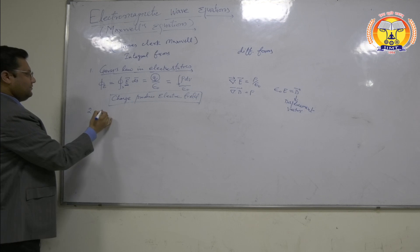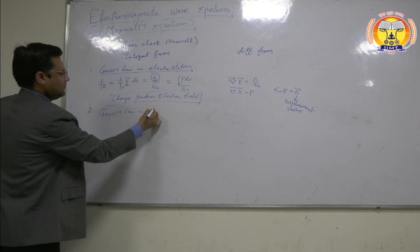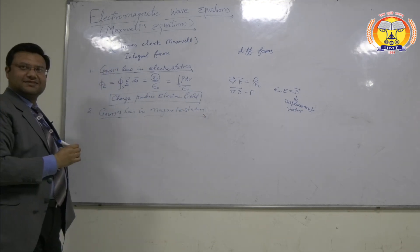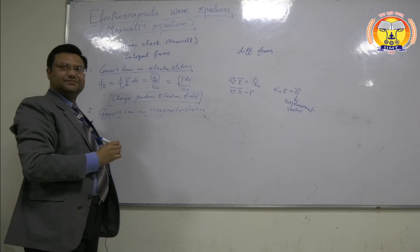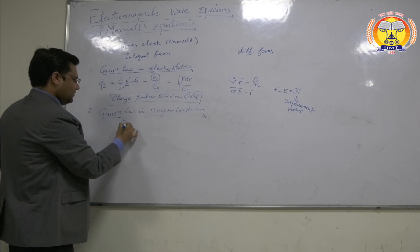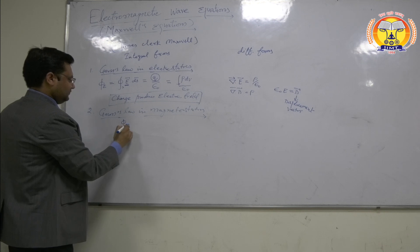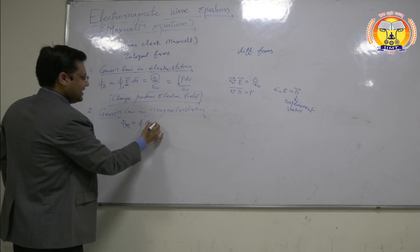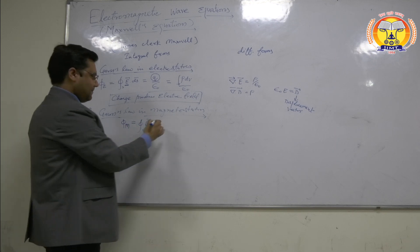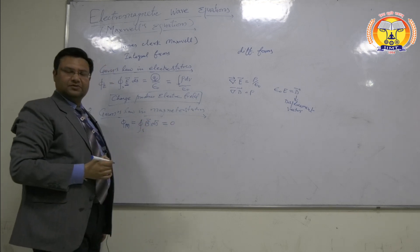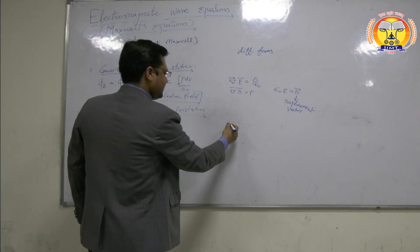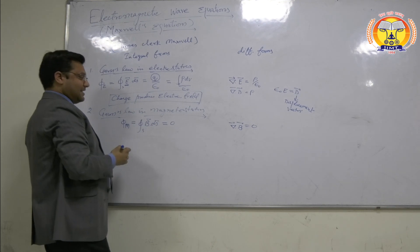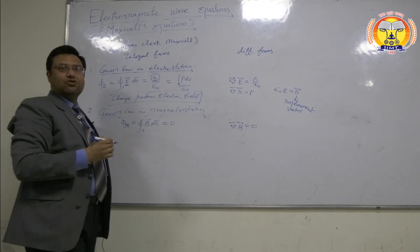The second equation is Gauss's law in magnetostatics. It states that the surface magnetic flux — that is, the integral of B dot dS over a closed surface — is always zero. In differential form, del dot B equals zero. This indicates that the magnetic field is solenoidal, meaning it is endless.